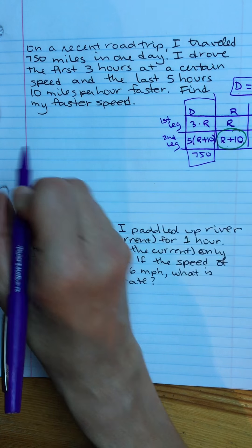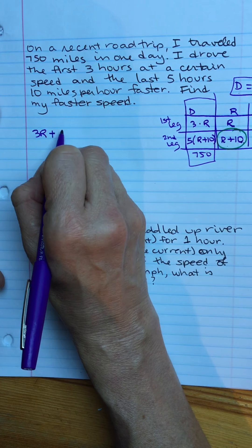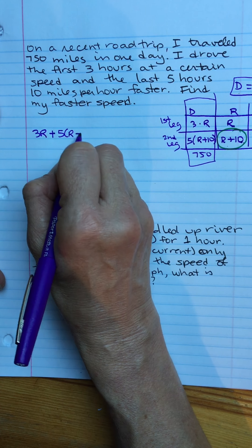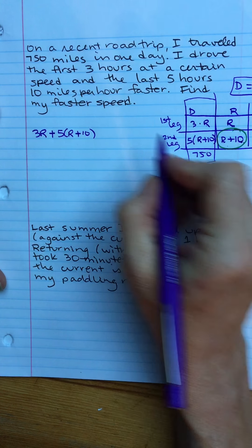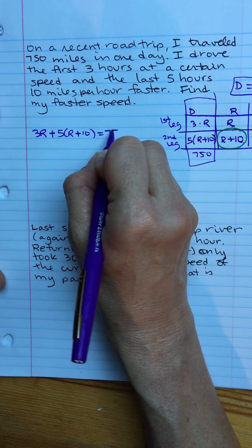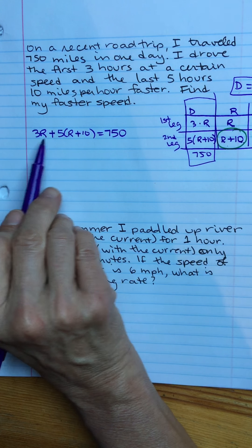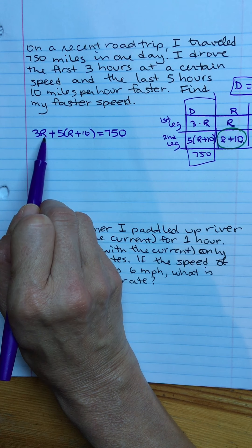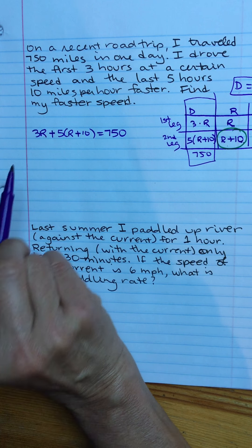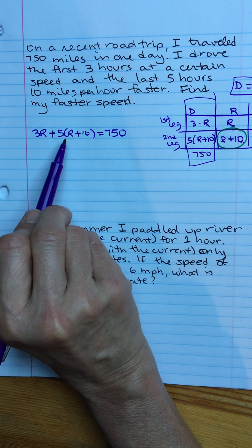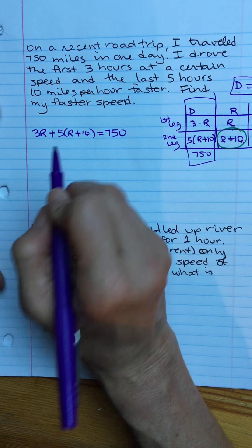Now that first column I'm going to write an equation about that first column's relationship. So three times R, distance I travel on the first part, plus five times the quantity R plus 10, that's the distance I travel in the second part. And all together I went 750 miles. So here's my linear equation. We call it linear equations when your letters are only raised to the first power, and it's only one letter.